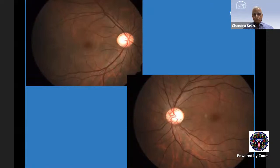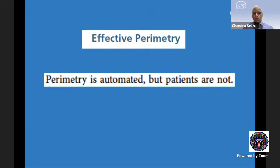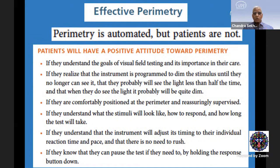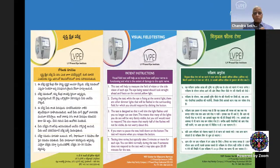The first lesson in visual field examination is that we, as doctors and our team, must understand what the patient is going through and be very supportive. The fifth edition of the perimetry book by Anders Heijl and Mike Patella has very recently come out — I had the fortune of receiving the soft copy from Anders Heijl himself. One of the key things this book says is that perimetry is automated, but the patients are not. We also have pamphlets made in different languages giving instructions to patients before the test.